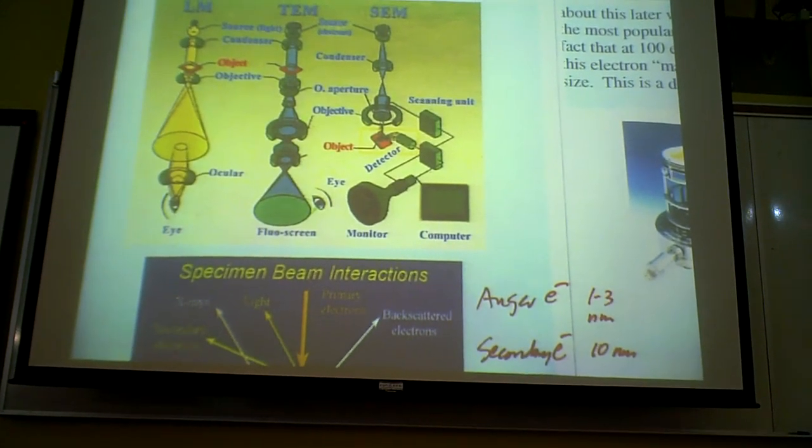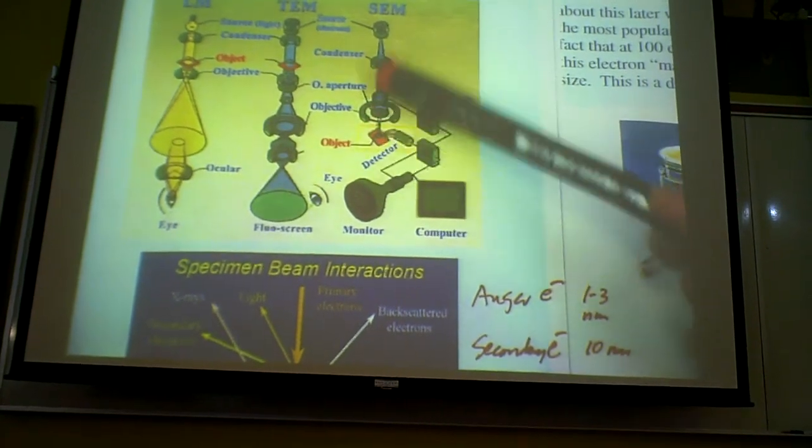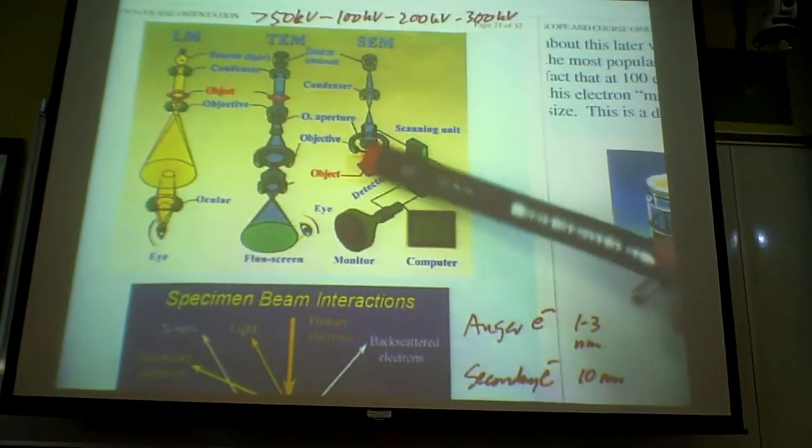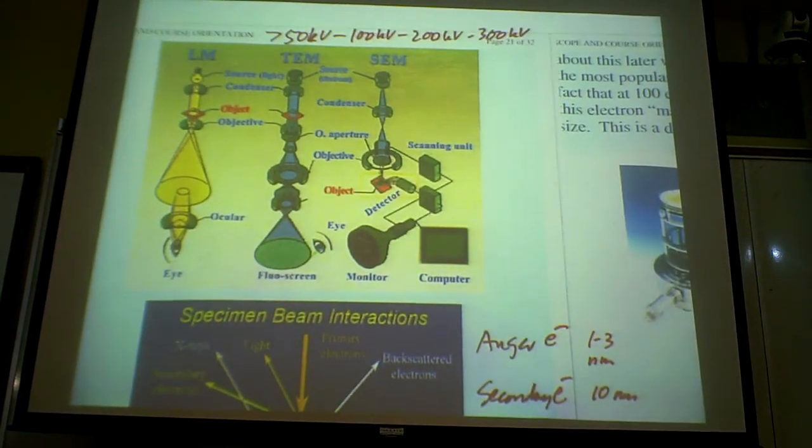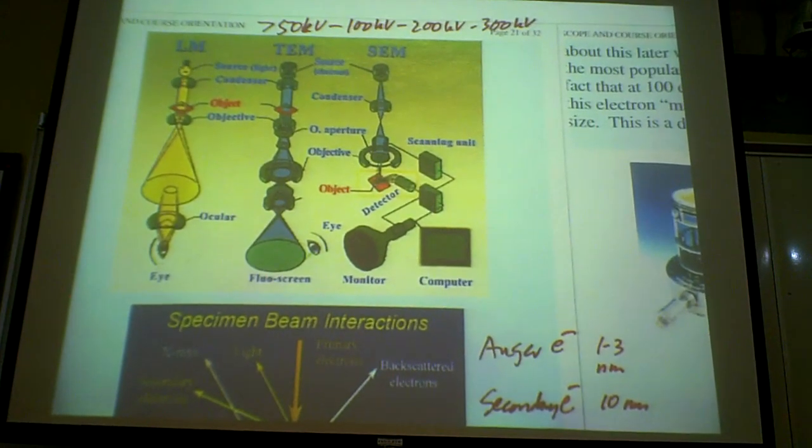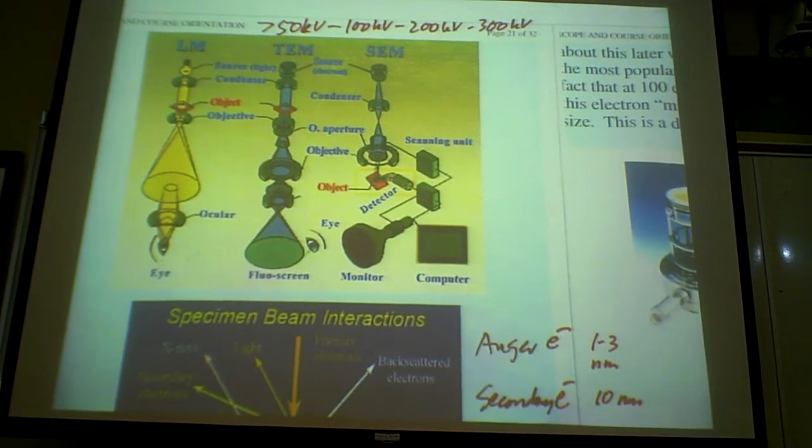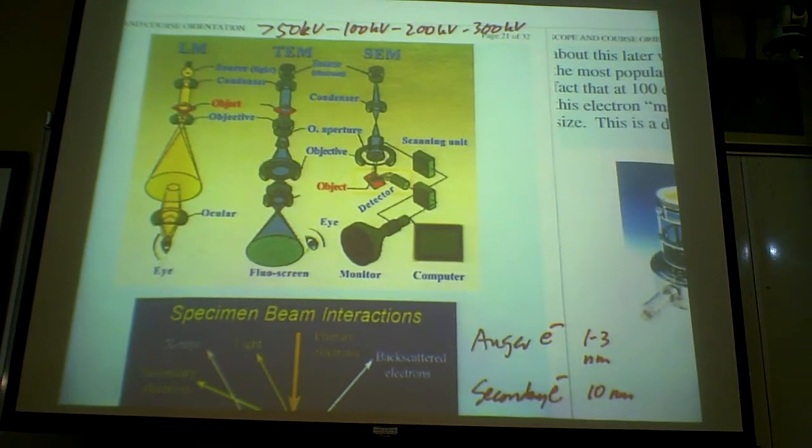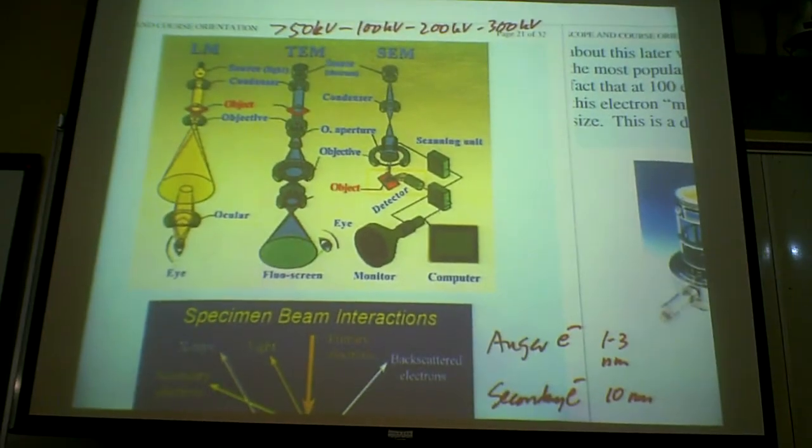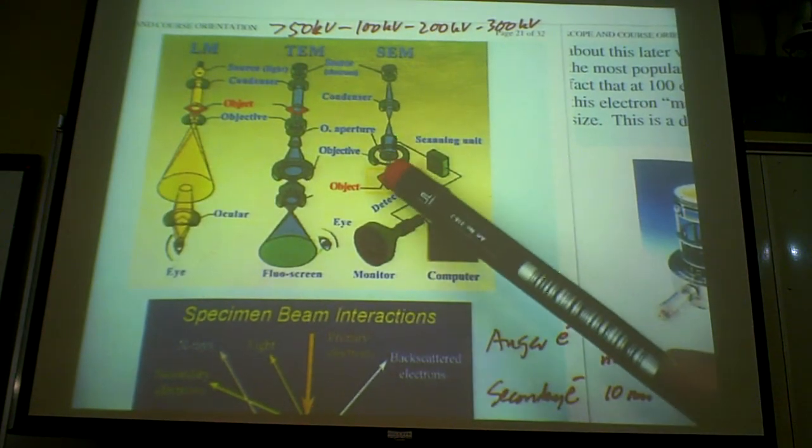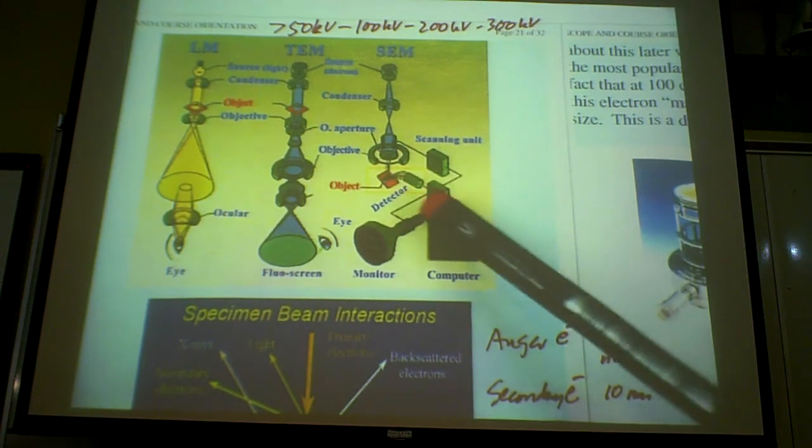You have this electron being impinged onto the specimen, and you're detecting secondary electron. Remember, secondary electron is less than 20 electron volt, and so they have to come from the surface, 10-nanometer within the surface. So, this is why SEM is looking at surface morphology.